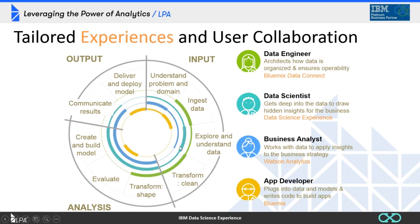Data scientists spend a lot of time exploring the data to understand what it is and what form it takes, and most of their time on analysis. The business analyst focuses on analysis and output, communicating how results impact the business to the larger community. Application developers are mostly interested in pulling data in, evaluating it, and deploying models. Each persona has very specific needs, but they all work together to get the most out of the data, sharing information and processes to efficiently gain insights.